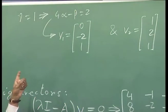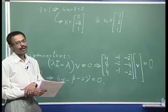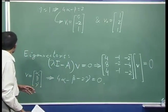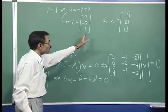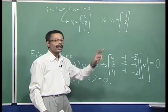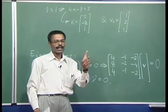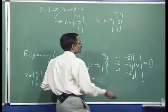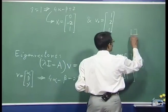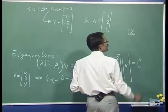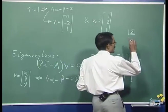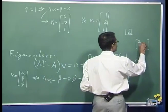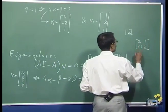That means this particular matrix is not diagonalizable — it is defective. Since it has got two linearly independent eigenvectors, it will have two Jordan blocks in its Jordan canonical form. One Jordan block will be a 1 by 1 Jordan block and the other Jordan block will be a 2 by 2 Jordan block.